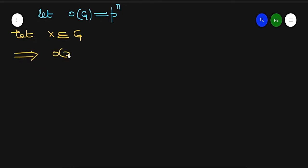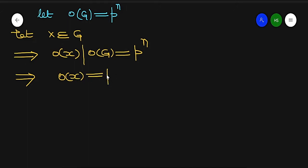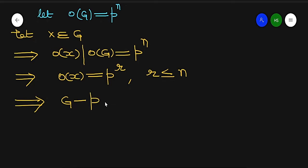By Lagrange's theorem, the order of x divides the order of G. Since order of G equals P^n, the order of x must equal P^r for some r less than or equal to n. Since every element x of G has order equal to a power of P, this means G is a P-group.